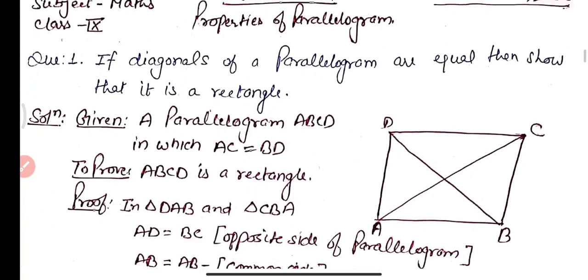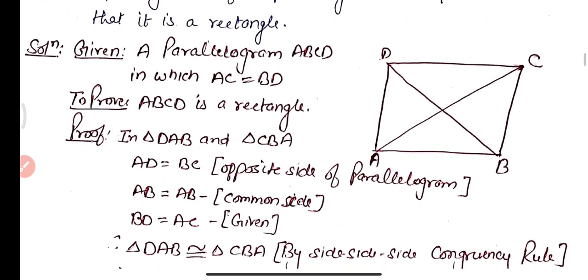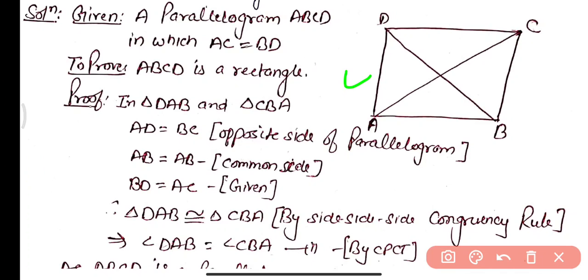Practice Question 1: If the diagonals of a parallelogram are equal, then show that it is a rectangle. We are given parallelogram ABCD in which diagonal AC equals diagonal BD, and we need to prove that ABCD is a rectangle.